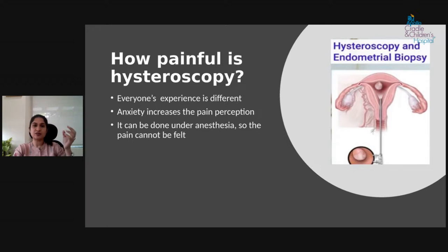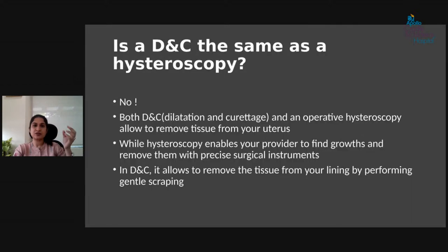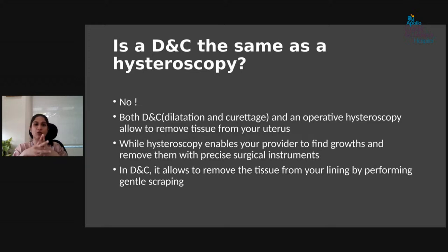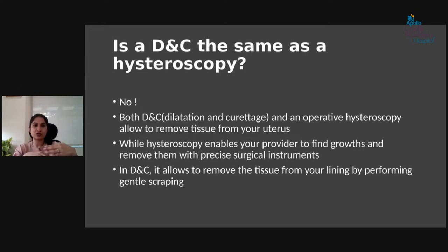Hysteroscopy allows multiple procedures at once. If a polyp or fibroid is seen, it can be removed immediately. If the endometrial lining is thick, an endometrial biopsy or D&C can be done and tissue sent for biopsy. In some cases, a Mirena IUD can be inserted immediately after the procedure on the same sitting. From what we see inside the uterus, we can determine whether the findings are normal or benign and plan the next step accordingly.